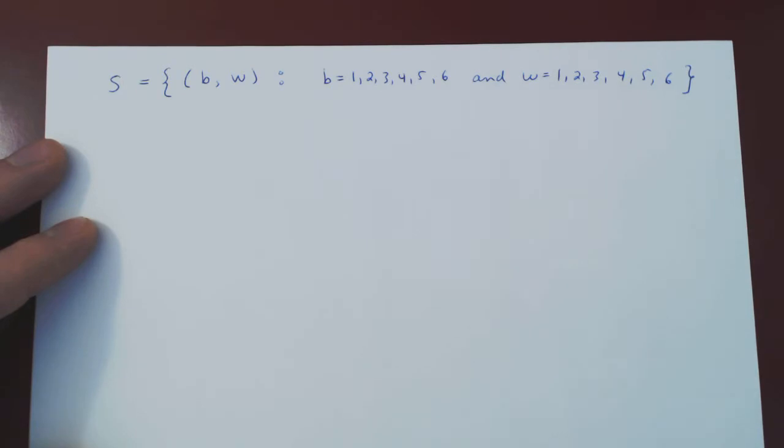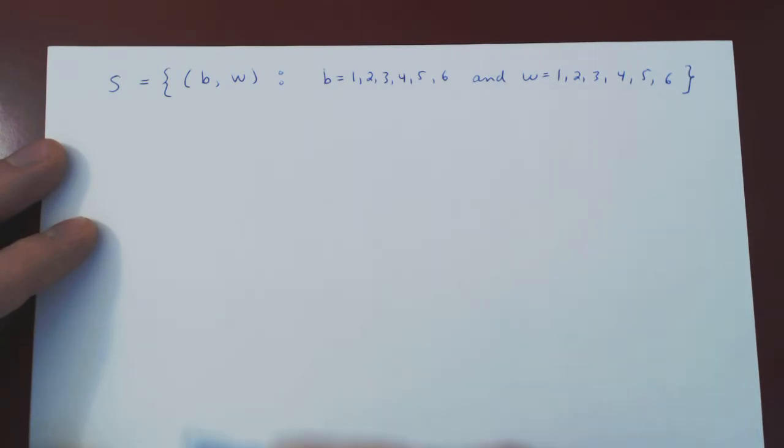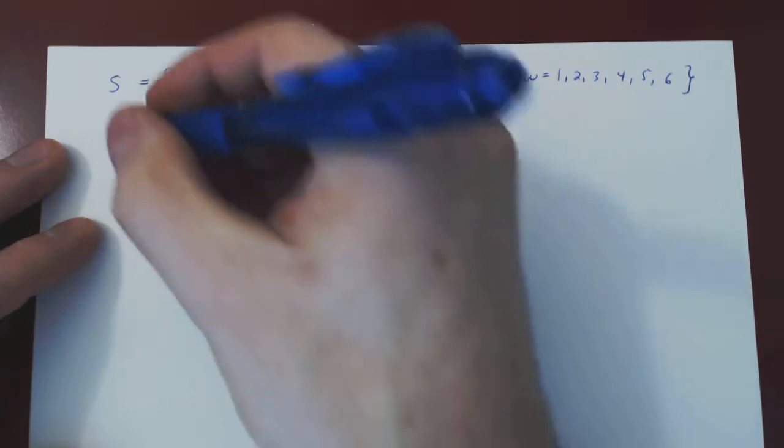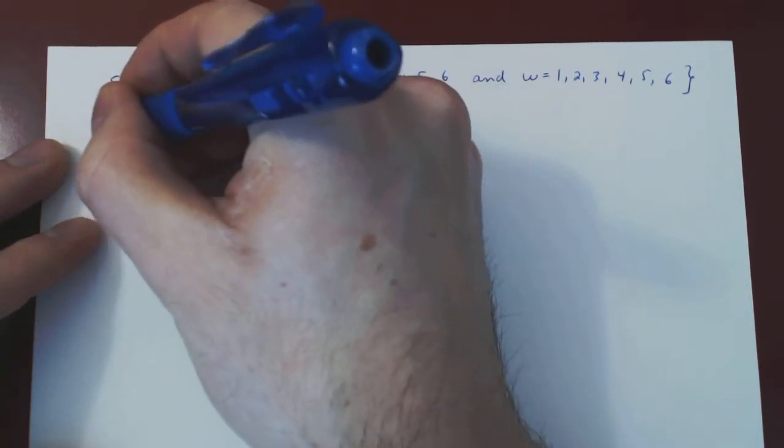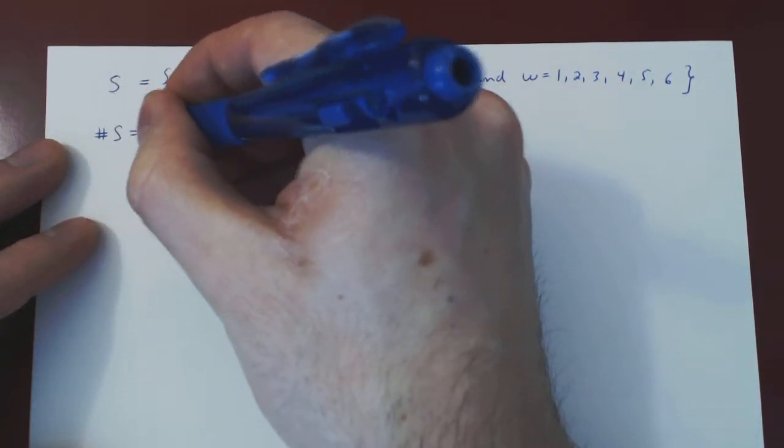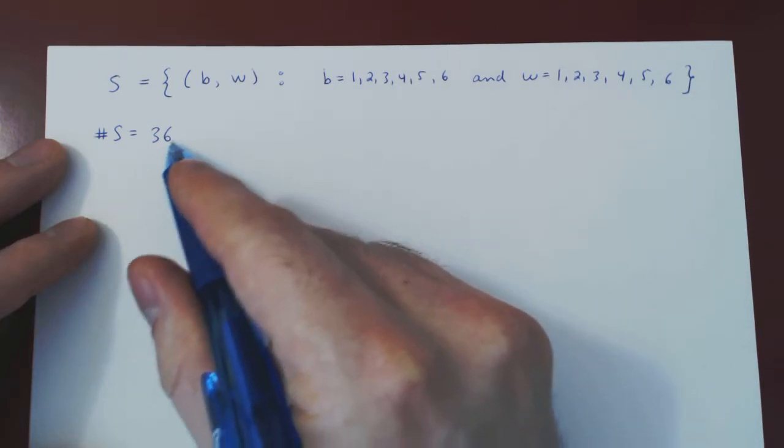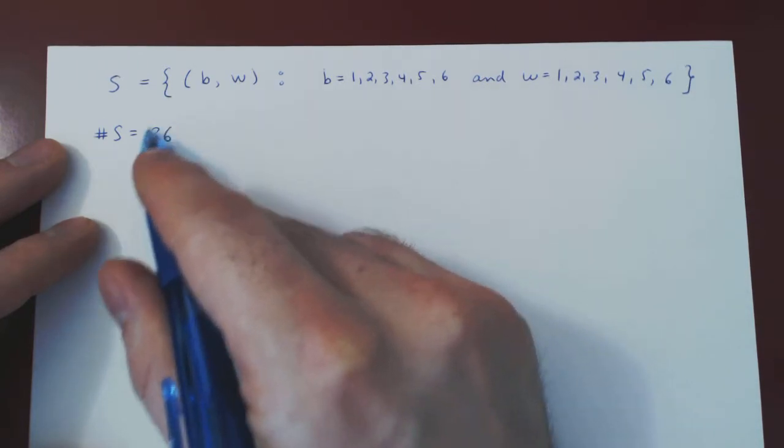Because we're saying and, when it comes to counting we're multiplying. So it's six times six, therefore there are 36 different possible pairs, which is why I'm not going to list every single one of them. There's 36 of them.